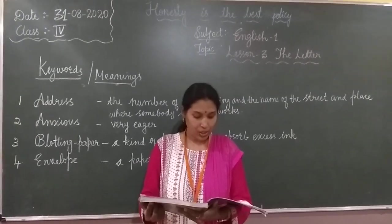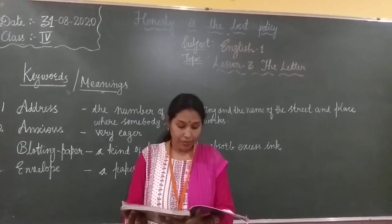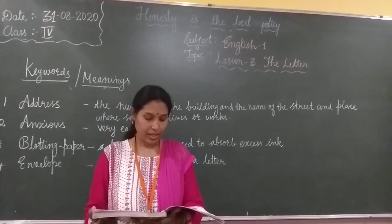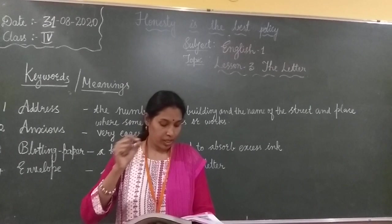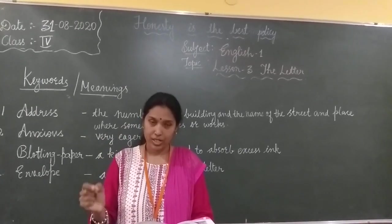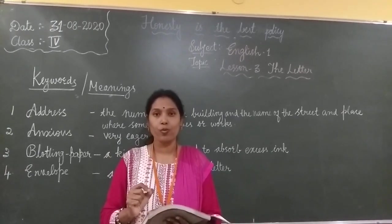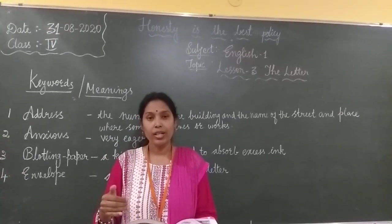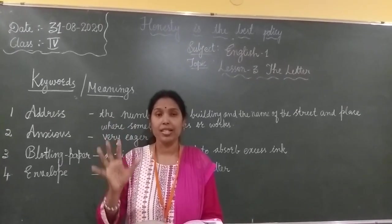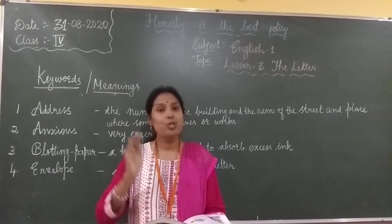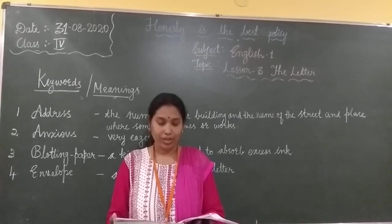'I turned the page over and then goes my pen. Till lastly, come kisses, there is just room for ten.' After writing the first page, she turned to the next page and completed her letter writing. At the end of the letter, she gave kisses to her mother. How many kisses? Ten kisses. That much space only was there in the letter. So the poet gave ten kisses to her mother at the end.